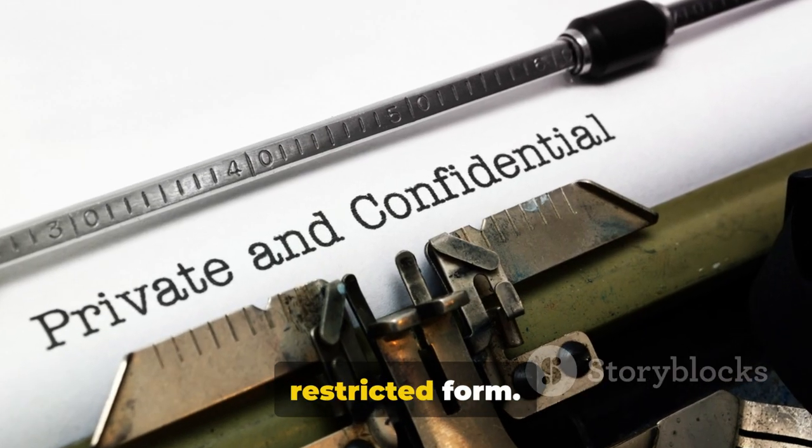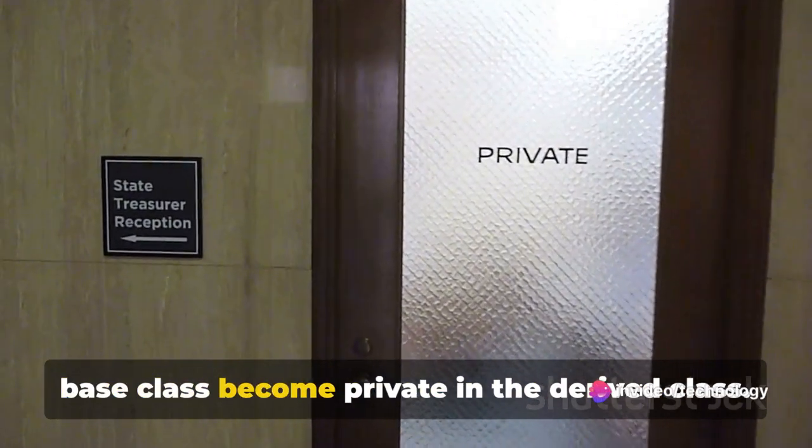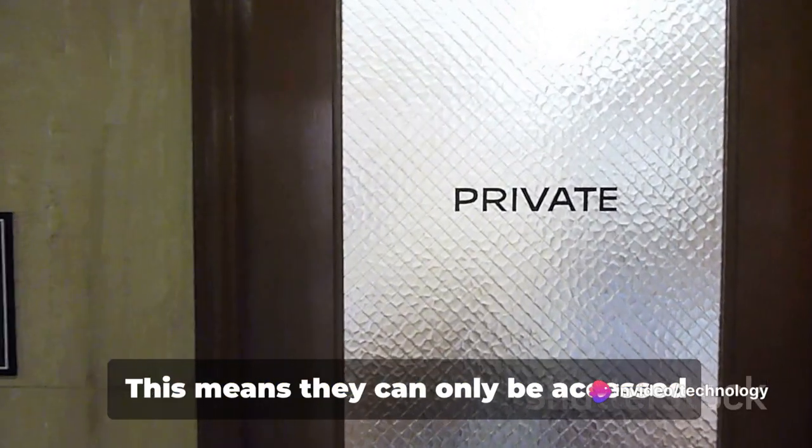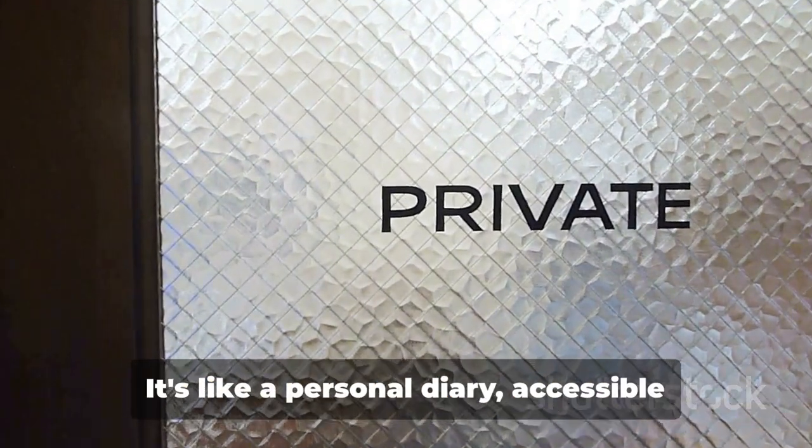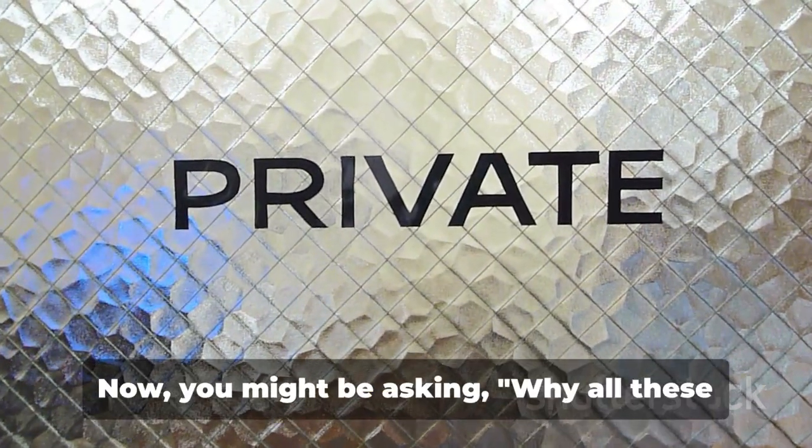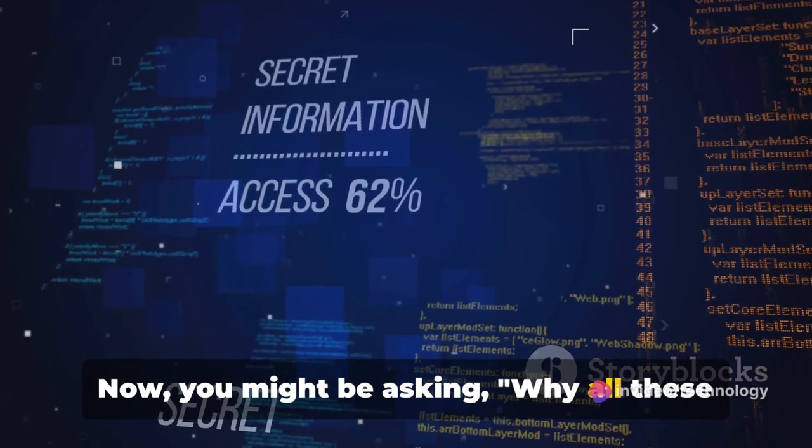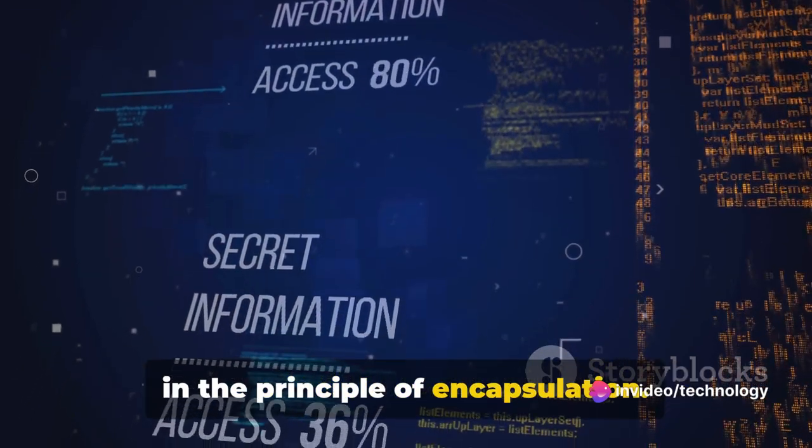Private inheritance is the most restricted form. Here, public and protected members of the base class become private in the derived class. This means they can only be accessed within the derived class itself. It's like a personal diary, accessible only to the owner. Now, you might be asking, why all these levels of access control?